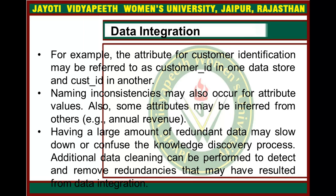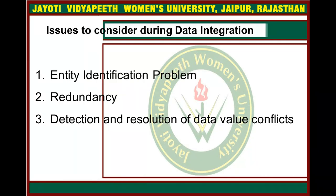Naming contradictions for attribute values can also occur. Some characteristics can also be derived from others, like annual revenue. A large amount of redundant data can slow down or confuse the process of information discovery. Additional data cleaning can be carried out to identify and eliminate redundancies arising from data integration. There are three issues to consider during data integration: first, entity identification problem; second, redundancy; and third, detection and resolution of data value conflicts.